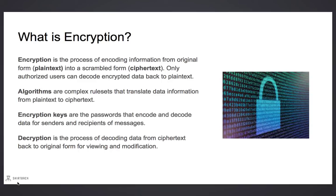Algorithms are complex rule sets that translate the data from plain text to ciphertext. Encryption keys are the passwords we use to encode and decode data that's sent in messages. The process of decoding data is called decryption.